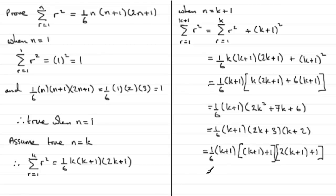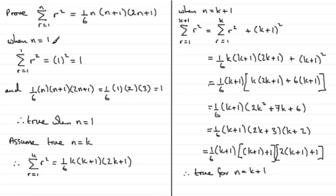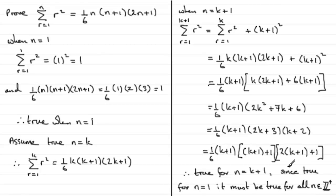Therefore it's true for n equals k plus 1. To finalise: we know that if it's true for n equals k, it's been proved to be true for n equals k plus 1. We proved it was true for n equals 1, so therefore it must be true for n equals 2, n equals 3, and so on for all positive integers. Therefore, since true for n equals 1, it must be true for all positive integers n.